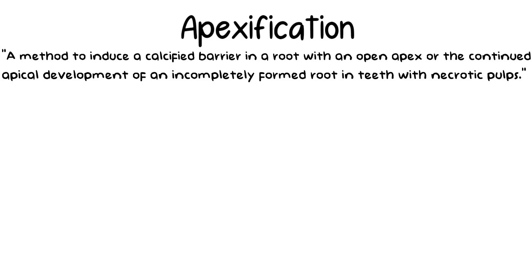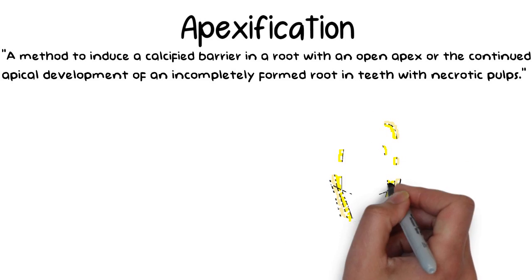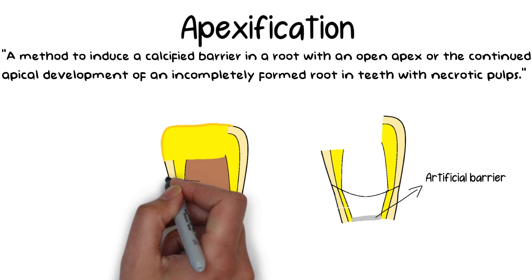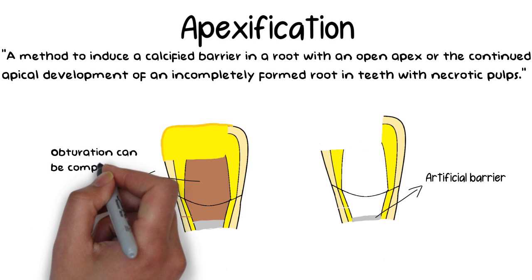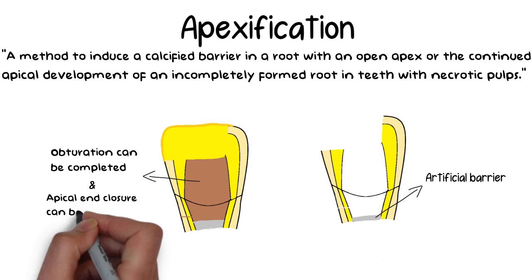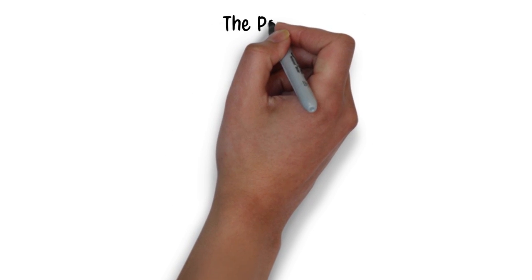In apexification, a calcified barrier is created at the root end in order to have an artificial root end closure, so that the root canal treatment can be completed and an apical seal can be achieved. Now let's discuss the procedure of apexification.